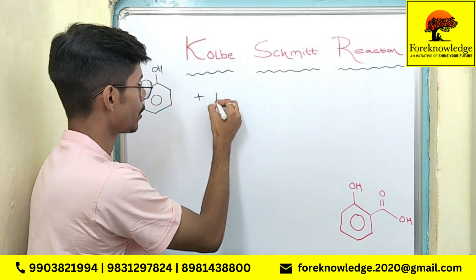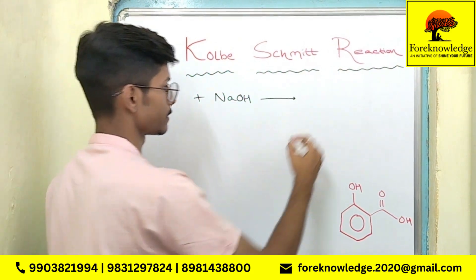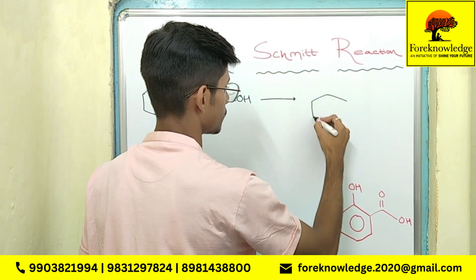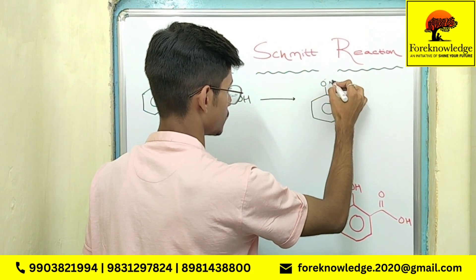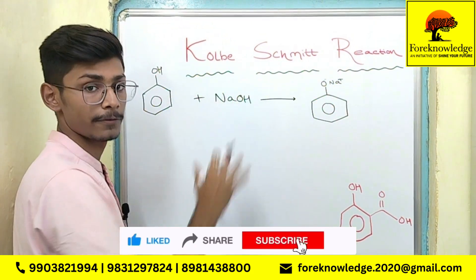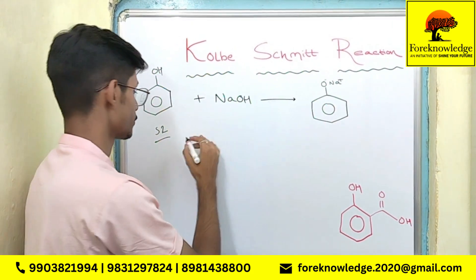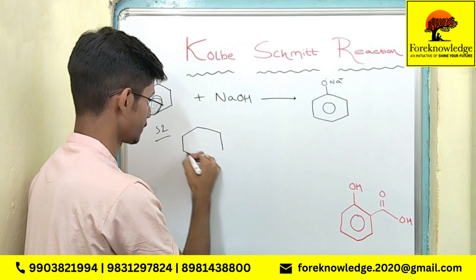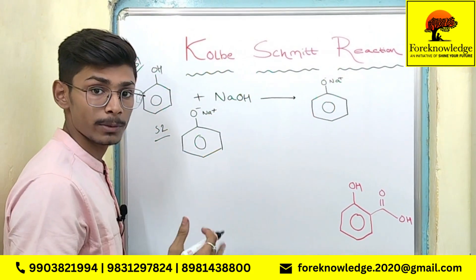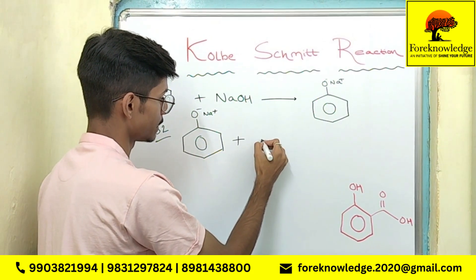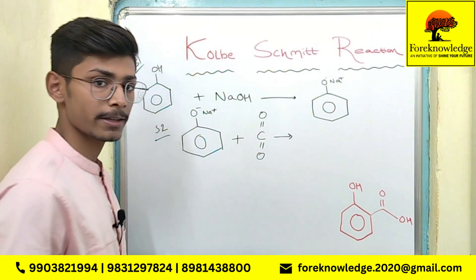Phenol on reacting with sodium hydroxide will give us sodium phenoxide. This was step 1. And in the second step, sodium phenoxide on reacting with carbon dioxide, that is CO₂, will give us sodium salicylate.